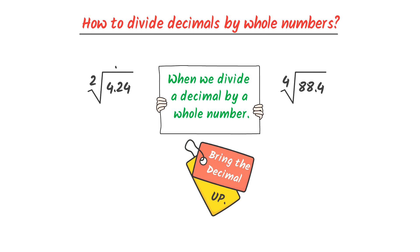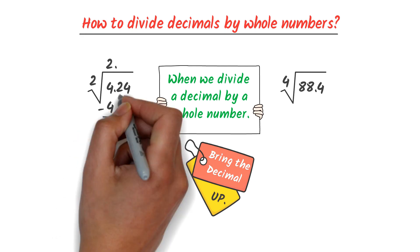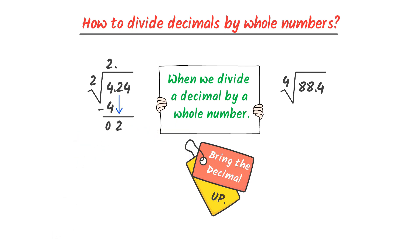So I bring this decimal straight up. Now I select the first digit 4. We can see that 4 is greater than 2, so I don't need to select any other digit. We know that 2 times 2 is equal to 4, thus 4 minus 4 is equal to 0. Then I bring down this 2 here. We know that 2 times 1 is equal to 2, thus 2 minus 2 is equal to 0.